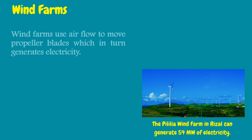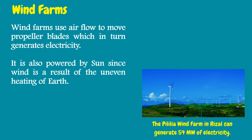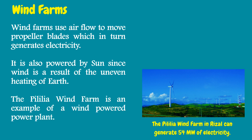Wind farms use air flow to move propeller blades, which in turn generates electricity. Wind power is also driven by the sun, since wind is a result of the uneven heating of Earth. The Pililla Wind Farm is an example of a wind-powered power plant.